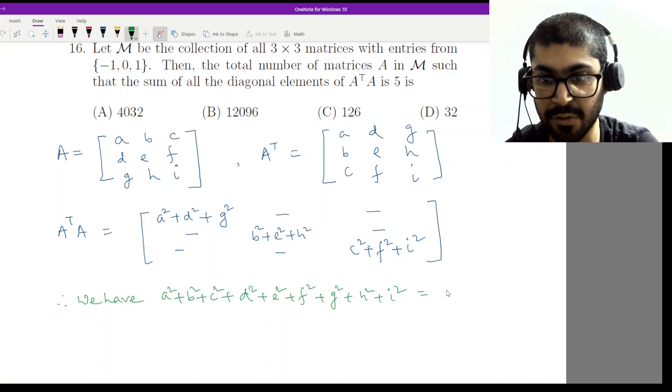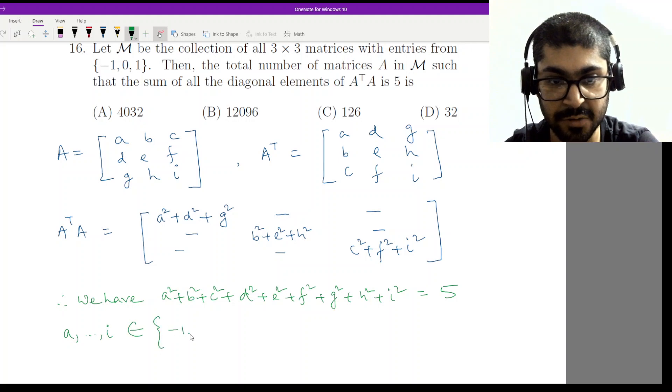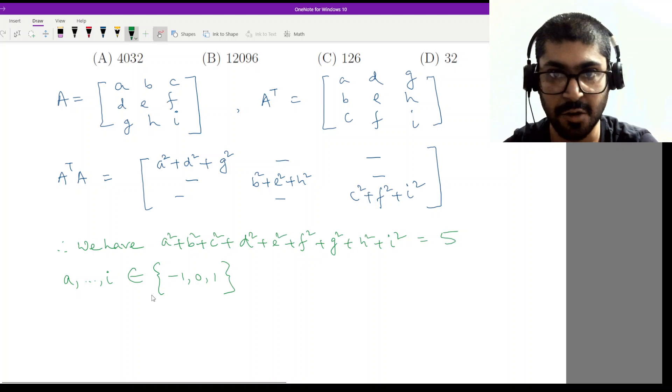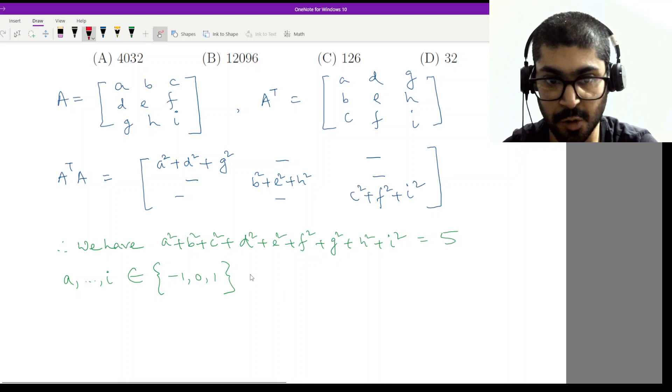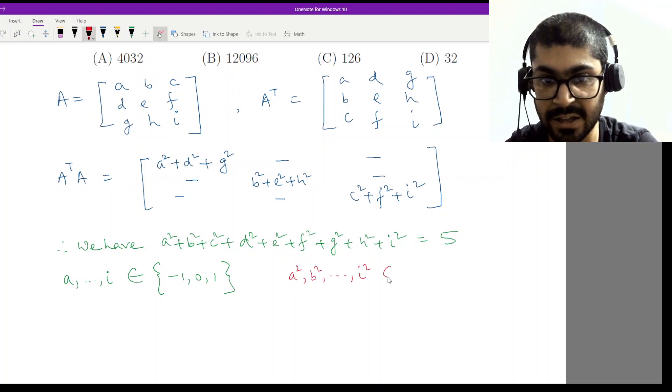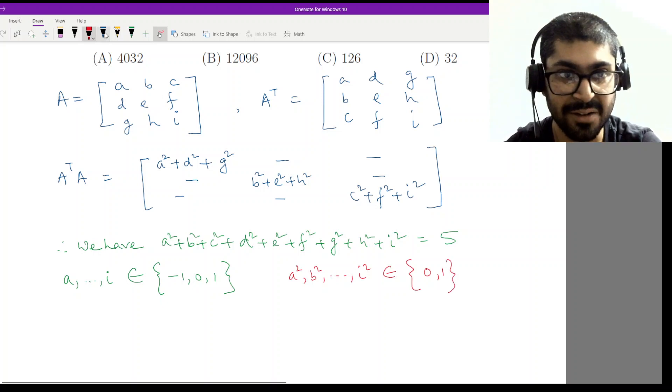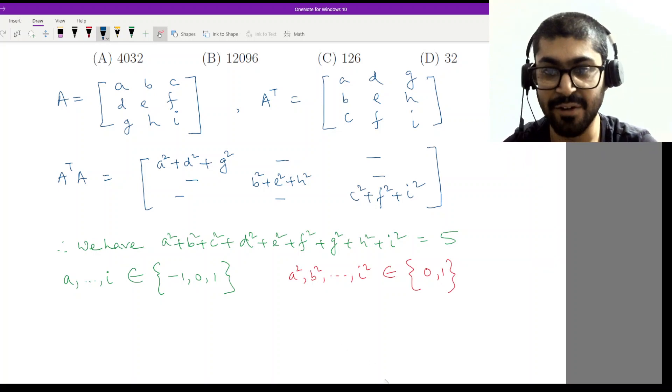Where are these elements from? a to i, they belong to {-1, 0, 1}. So the squares of these will either be zero or one. Although they belong to {-1, 0, 1}, a squared, b squared, dot dot dot, i squared, they belong to {0, 1} only. What do I need to get five? Exactly among these nine, I need exactly any five of them to be one.